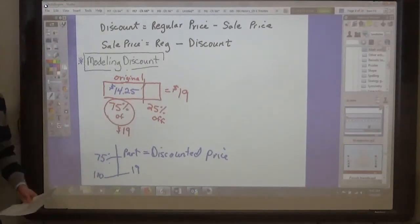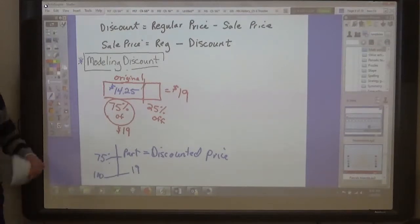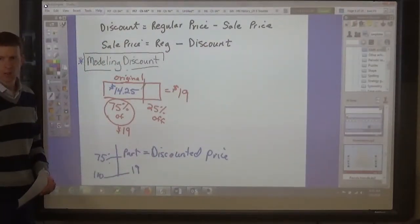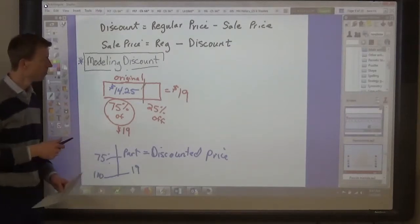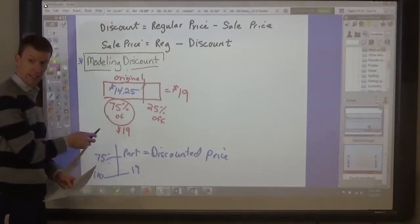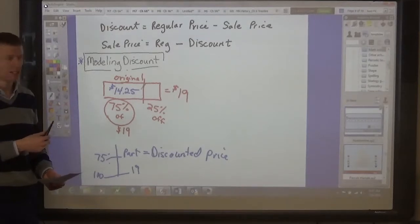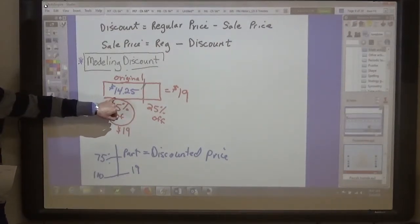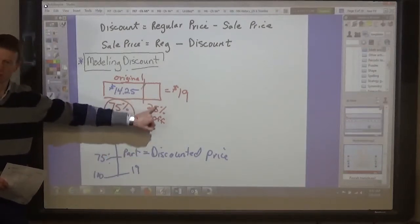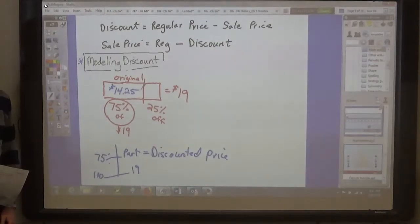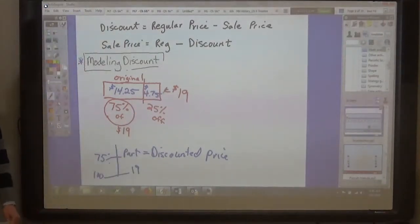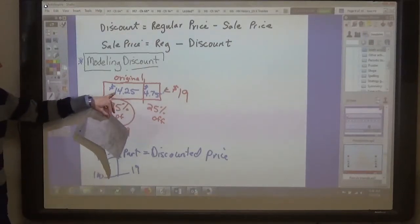How would you find the amount off, the amount that you're saving? Just subtract it. The discount is equal to the regular price minus the sale price. So what is the amount that you're saving then? $14.25. No, that's the price that you would be paying. That's the discounted price, that's the sale price. But if the original price was $19 and you're paying only $14.25, then how much are you saving? How much off is it? Kayden. $4.75. $4.75, okay?